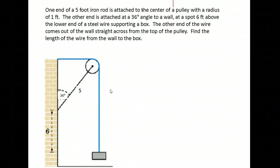In this example, we have one end of a 5-foot rod attached to the center of a pulley with a radius of 1 foot. The other end is attached at a 36-degree angle to the wall at a spot 6 feet above the lower end of a steel wire supporting a box. The other end of the wire comes out of the wall straight across from the top of the pulley. Find the length of the wire from the wall to the box.